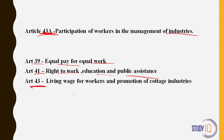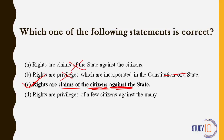Which of the following statements is correct? Rights are claims of the states against the citizen — no. Rights are privileges incorporated in the constitution — no, they are not privileges. Rights are claims of the citizens against the state — yes, this is correct. Fundamental rights are those you can go to court for if the government or society is not giving them to you. Rights are privileges of only a few — no, we have right to equality and everyone has equal rights. The answer is C. Rights are claims of citizens against the state, not vice versa.